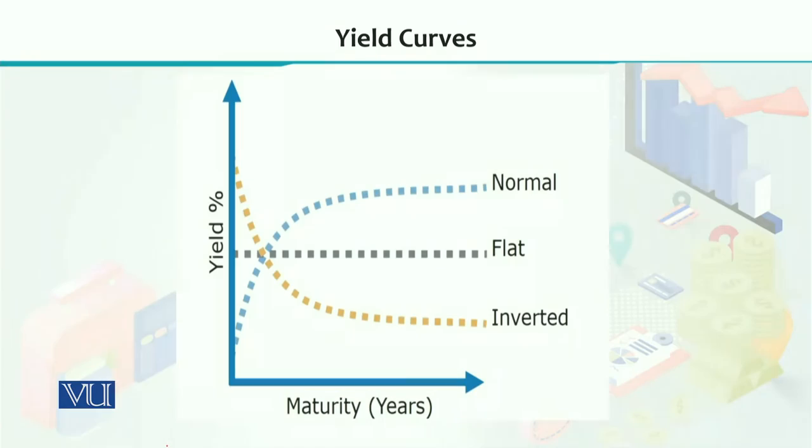Yield curve ko explain karne ke liye abhi main ek diagram se illustrate karungi. Yaha pe tino forms of yield curves ko draw kiya gaya hai. Normally jo yield curve hai ye upward sloping hota hai jisko yaha blue curve se represent kiya gaya hai. Maturity ko humne liya hai horizontal axis ke upar, yield yaani ke rate of interest jo aapko us bond pe paise milne wale hain that is taken along the vertical axis.